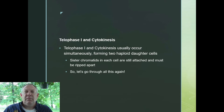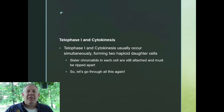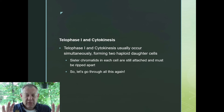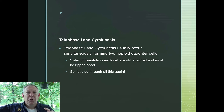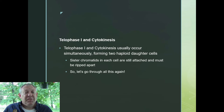Then you've got telophase I and cytokinesis, which happen very quickly and are often simultaneous. In mitosis at this point, the nuclear membrane would start to reform, the chromosomes would start to stretch out, the mitotic spindle would disappear — but that doesn't happen in telophase I, because we still have to go through the whole cycle again. Telophase I and cytokinesis basically just wrap up meiosis I and split the two things in half. But those sister chromatids are still attached to each other, so we've got to go through it again to rip those apart.